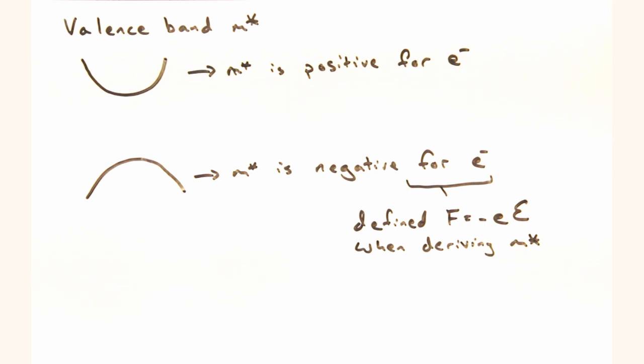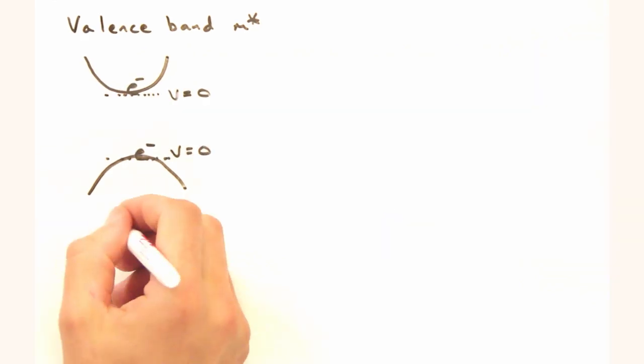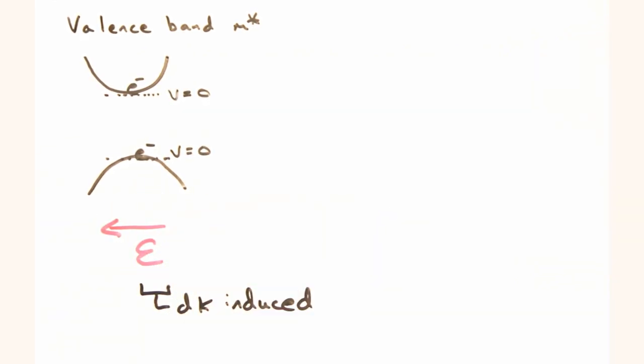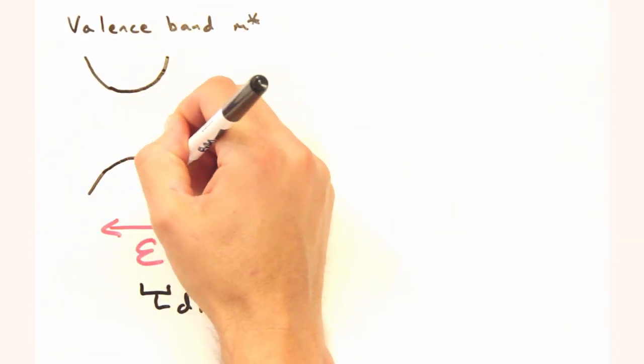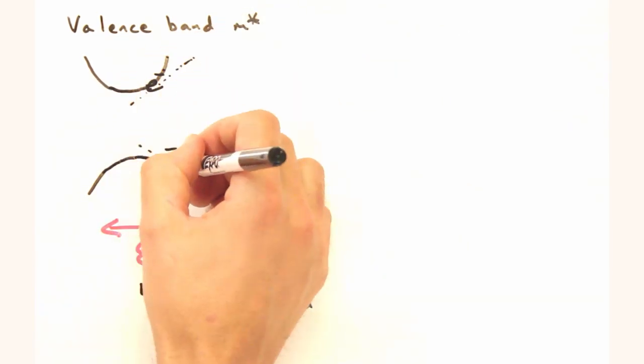So Eric, what do you think a negative effective mass means? Yeah, this seems extra creepy. Because now the negative mass means that the E field shifts the electrons like this.